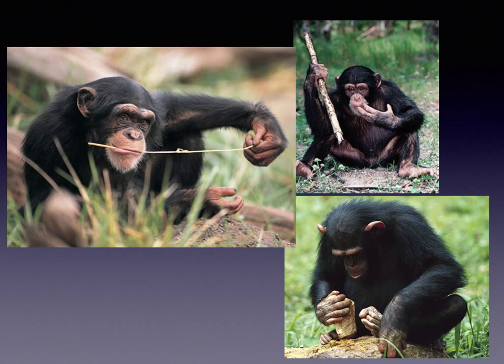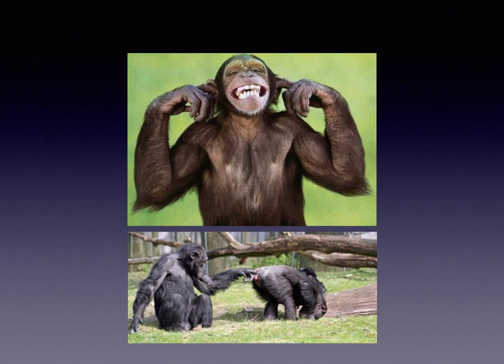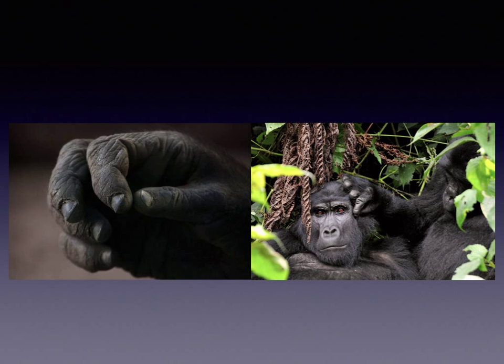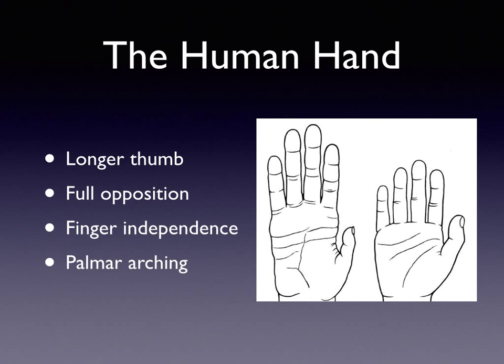As we move into the chimpanzee, the thumb is longer and starts to oppose. There's a key pinch demonstration and the ability to use the hand to grasp tools. There's also finger independence, which is unique to human and higher-order mammals. Looking at the hand of a gorilla — although it has a shorter thumb than in the human adult hand — it has an uncanny likeness to the human hand, such that a fine grasp, in this case a precision grip with the thumb, can be accomplished with great dexterity. The human hand has a longer thumb, it can fully oppose, there's finger independence and palmar arching.